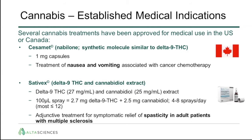There are also other synthetic molecules, such as nabilone, which is Cesamet, indicated again for nausea and vomiting, as well as Sativex, which is a combination of THC and cannabidiol specifically targeted for the symptomatic relief of spasticity in adults with multiple sclerosis.